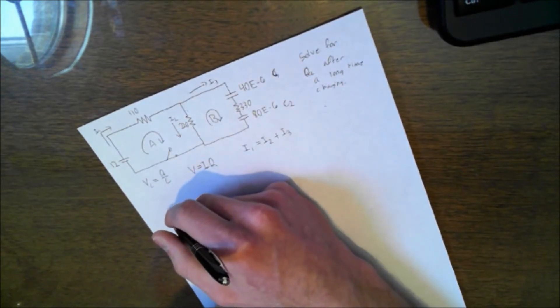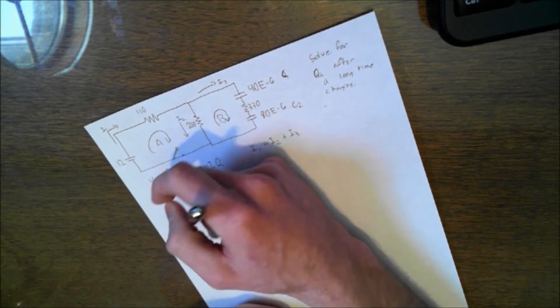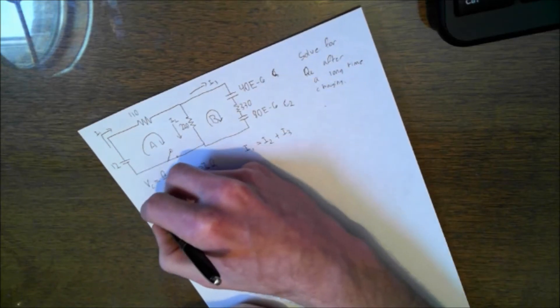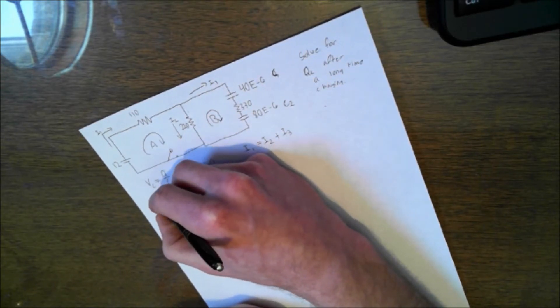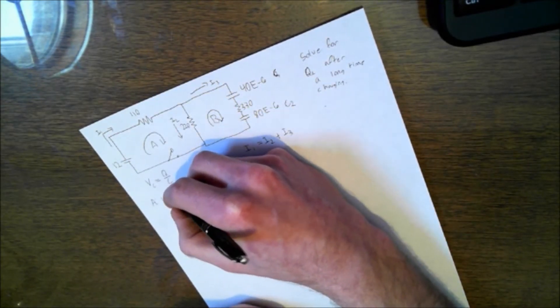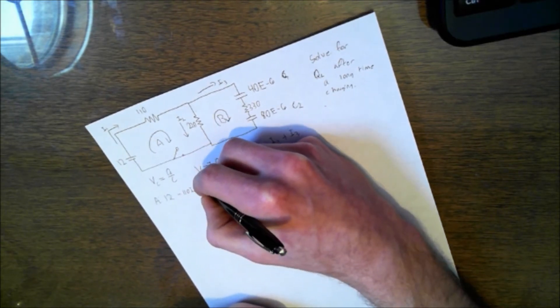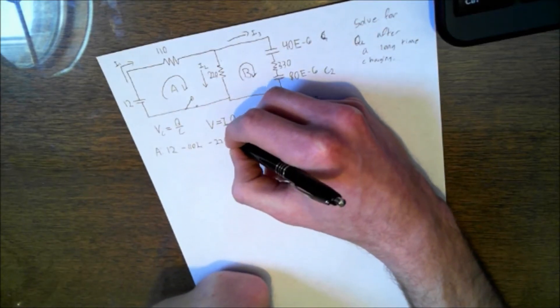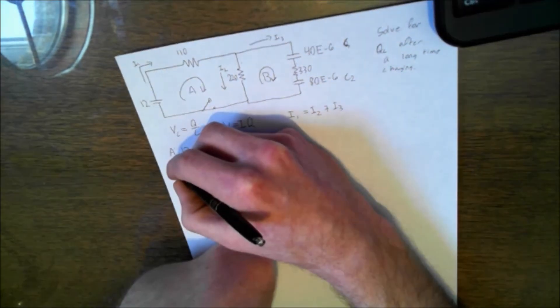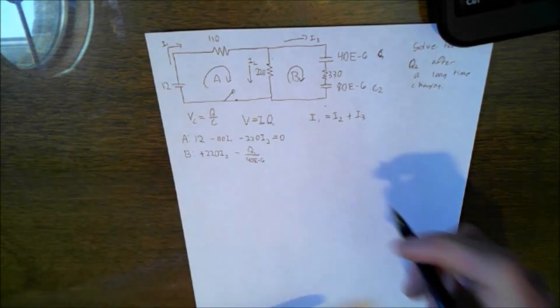So we're going to choose two loops. We're going to choose this loop, we're going to label that A subset A, and we're going to label this set B. Let's go around and do Kirchhoff circuit rules. So A is going to be, we're going to go 12 because we're going in the direction of the current with the battery, so that's a voltage gain. Drop across 110 ohm resistor I1 minus 220 I2 equals 0.